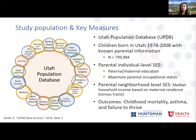Our study population is children born in Utah between 1978 and 2008 with parental information. Parental SES were collected from birth certificates including parental education, occupational status, and median household income for the census tract of the maternal residence at birth. The outcomes of interest were childhood mortality, asthma, and failure to thrive diagnosis prior to age 18.